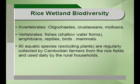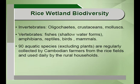Both fishes and rice can be grown together, or in alternate arrangements where after one crop you can grow fishes or go for duck farming and then return to rice farming. This wetland supports 90 aquatic species excluding plants. These 90 aquatic species are also collected by Cambodian farmers from rice fields and used by rural households, helping support livelihoods and socio-economic wellbeing.